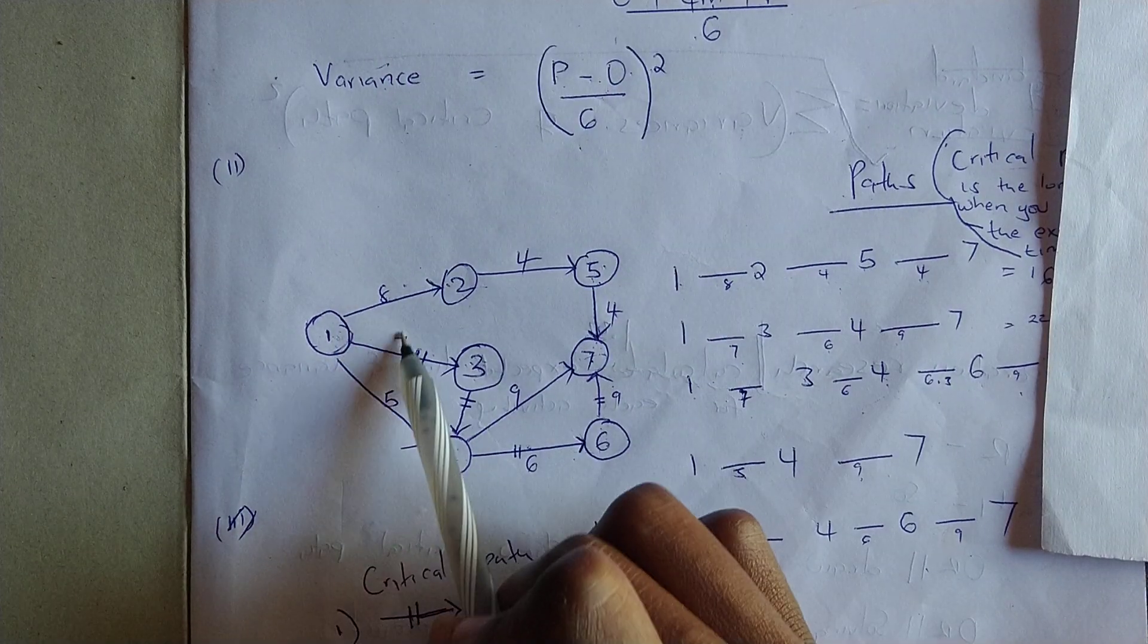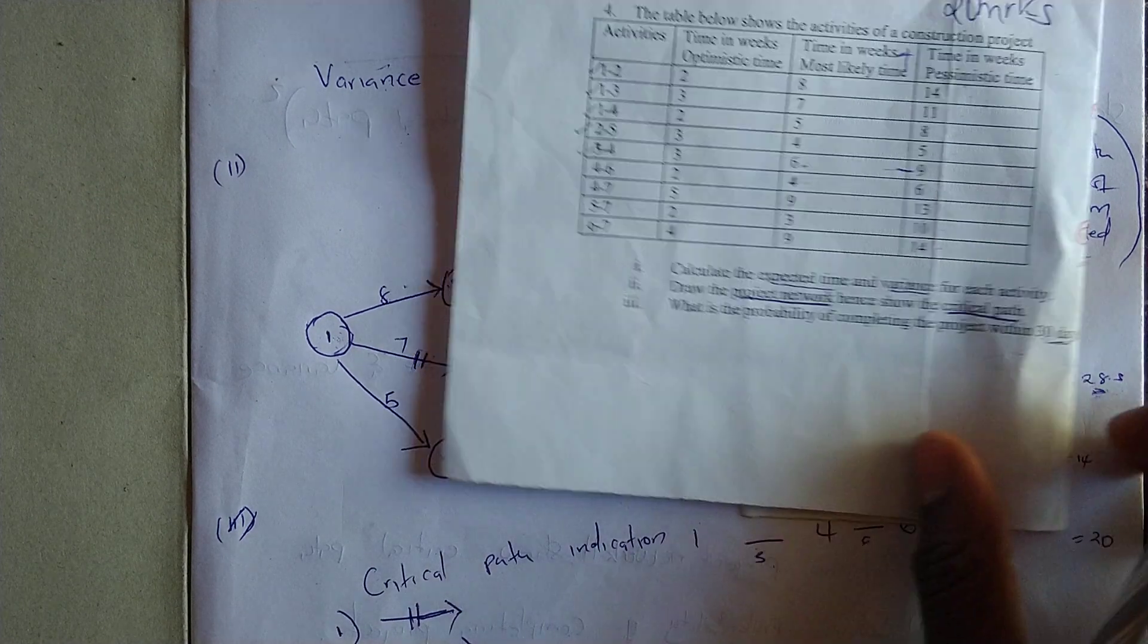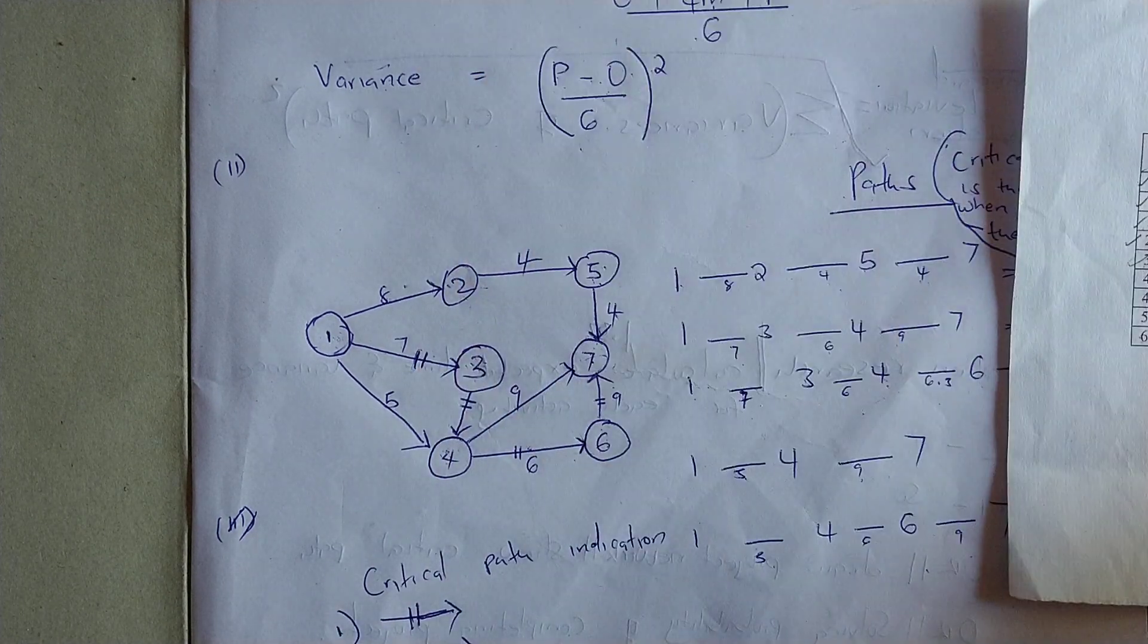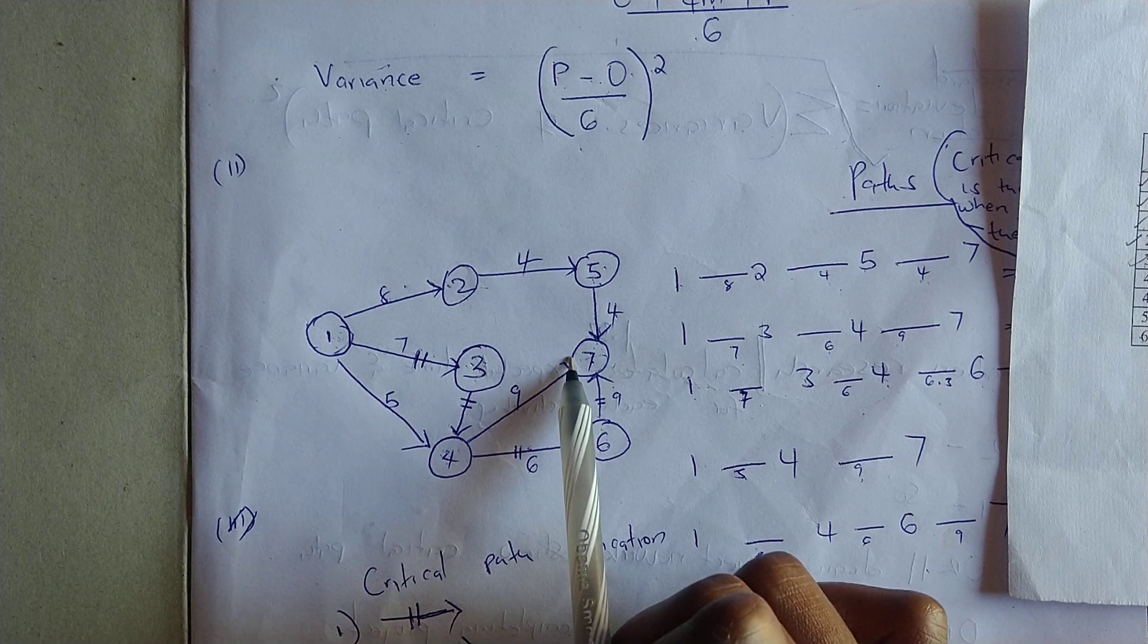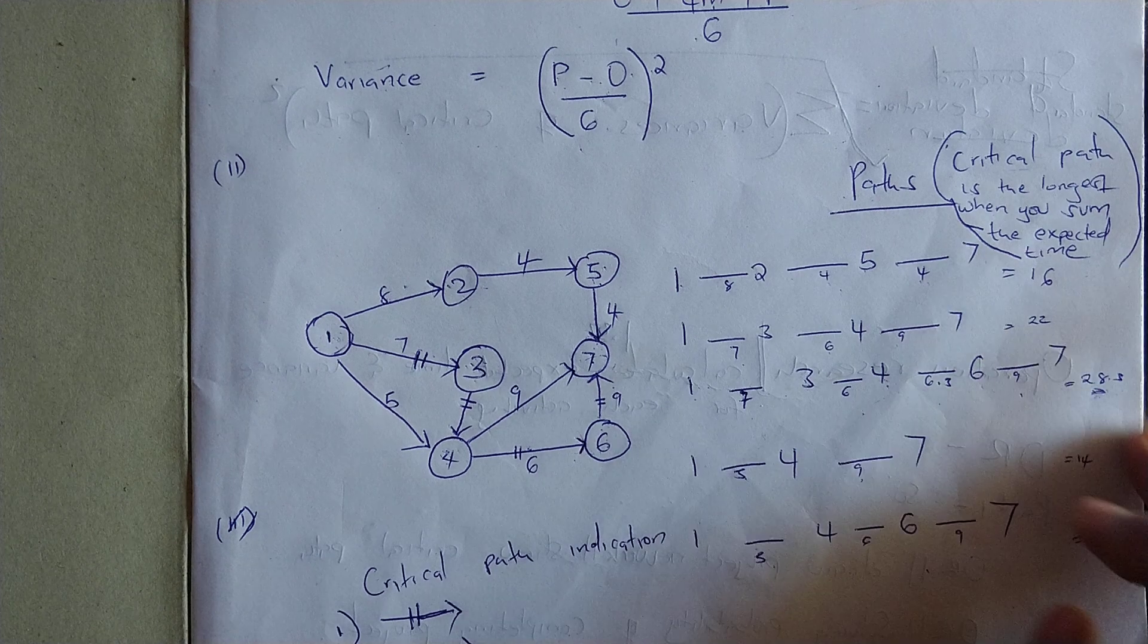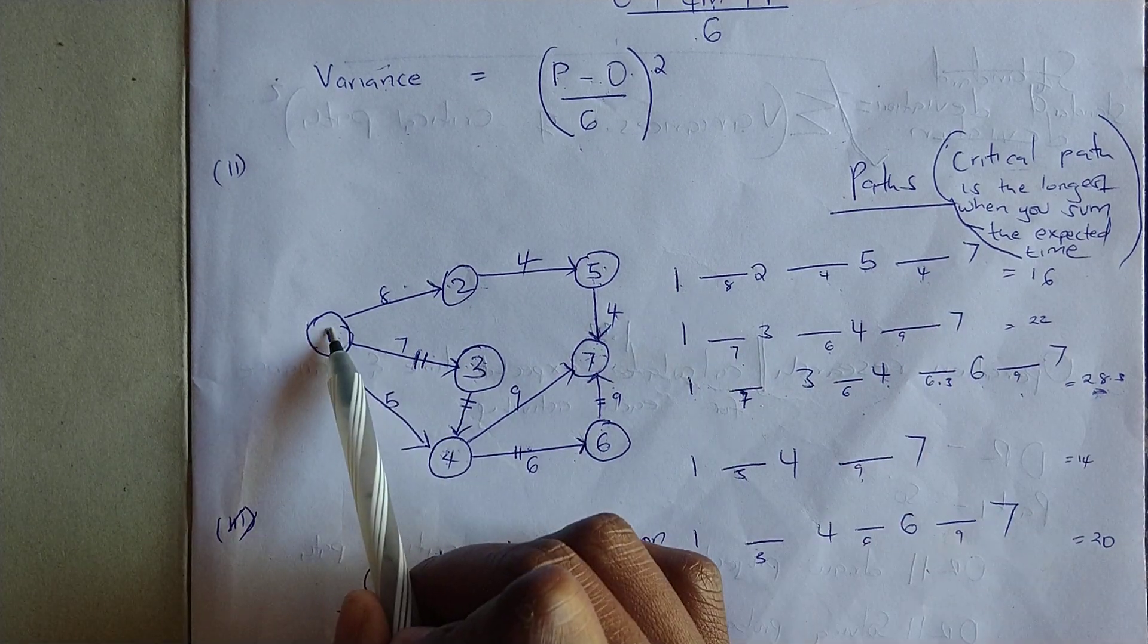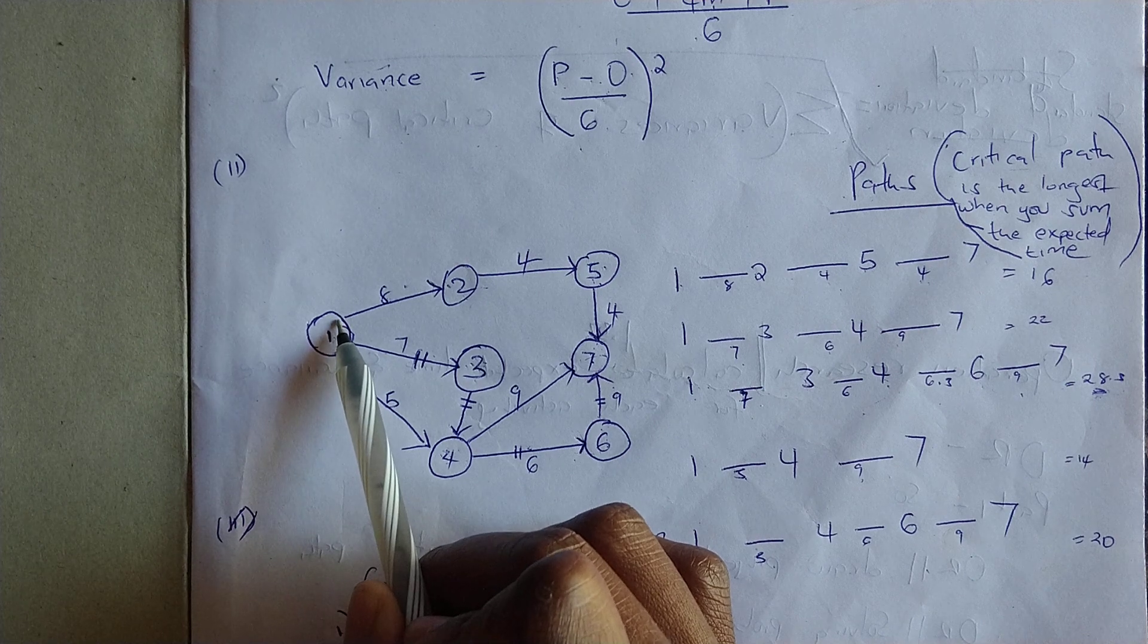To find the critical path, we're going to list all the paths from one to seven and then sum them each up to find the longest. For example, in this activity we have the flow of activities that will start from one to seven.